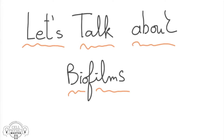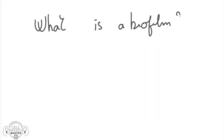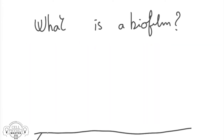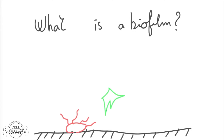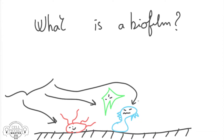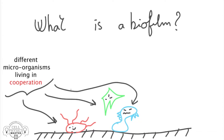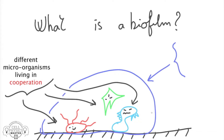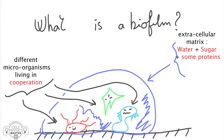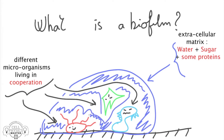Let's talk about biofilm. What is a biofilm? A biofilm is a symbiotic community of one or more species of microorganisms, such as bacteria or fungi, adhering together to a wet surface and protected by an extracellular matrix — a sort of mixture of water, sugars, and proteins.